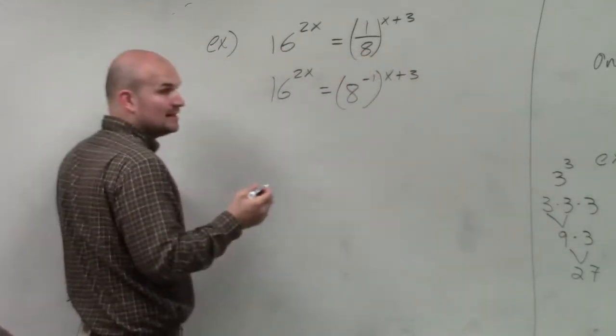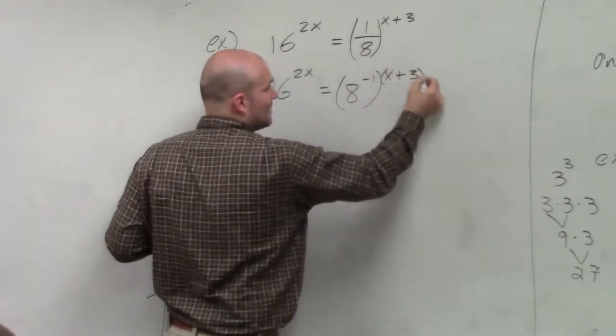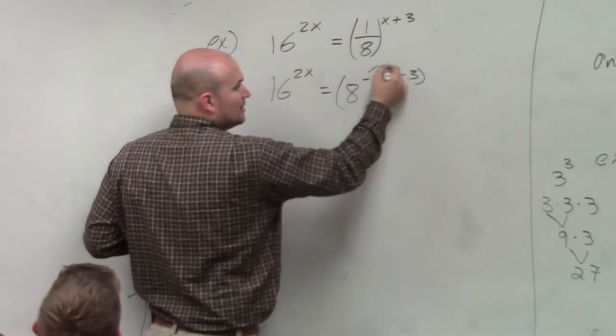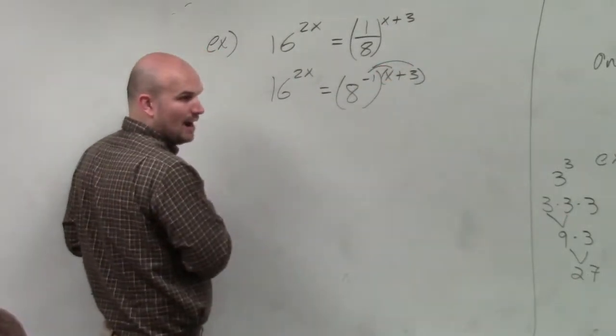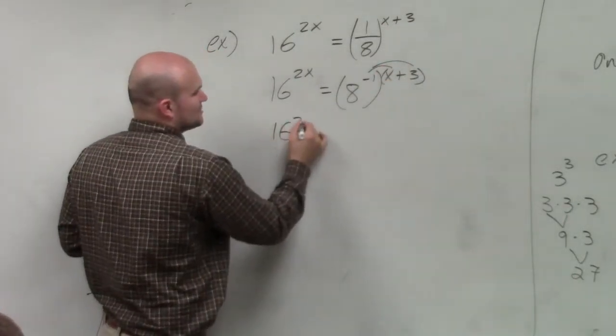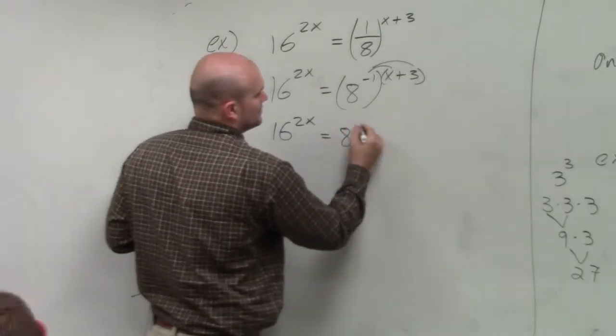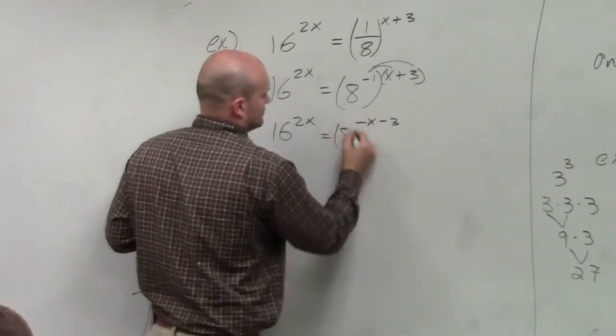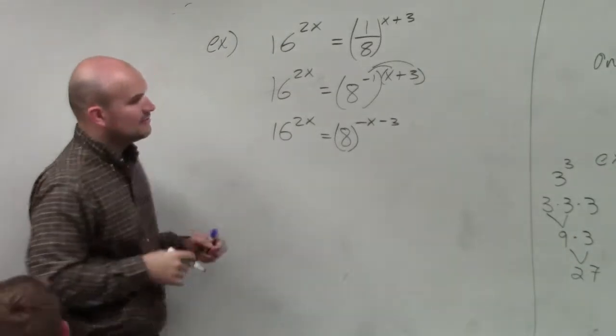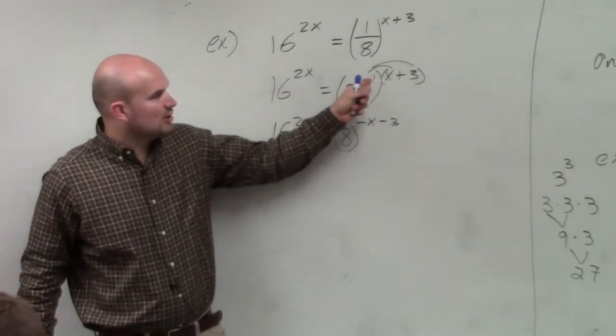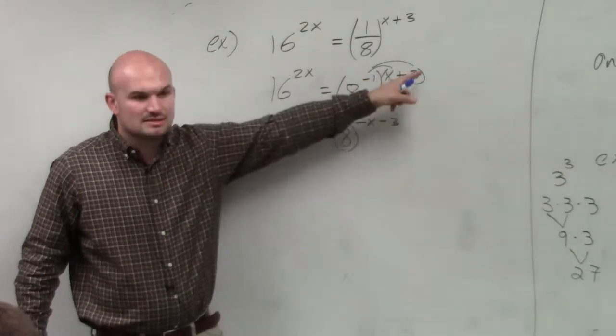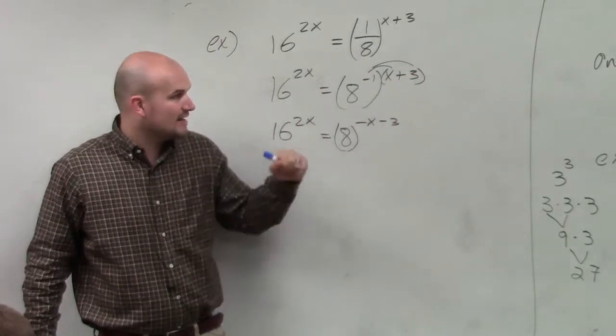Now remember, I can apply the power rule to this. When I have an exponent raised to a power, I've got to multiply my powers. So let's rewrite this here. So I'm rewriting that as I just multiplied the x plus 3 as negative x minus 3 because I multiplied it by negative 1.